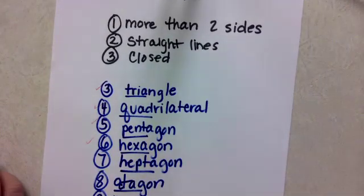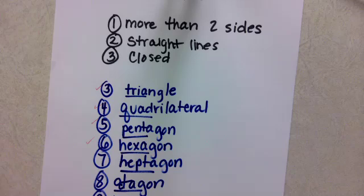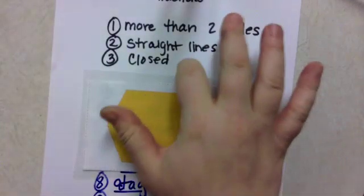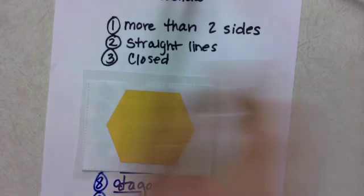So what you'll do, just like earlier in the week, is you will show a shape and ask them, is it a polygon? Yes or no? Yes. It meets all of those three criteria. What would we call it?